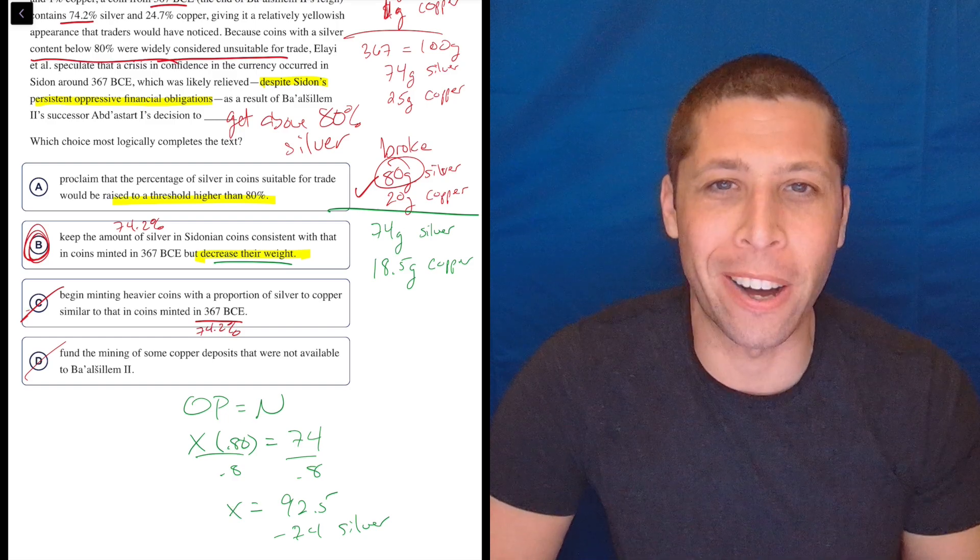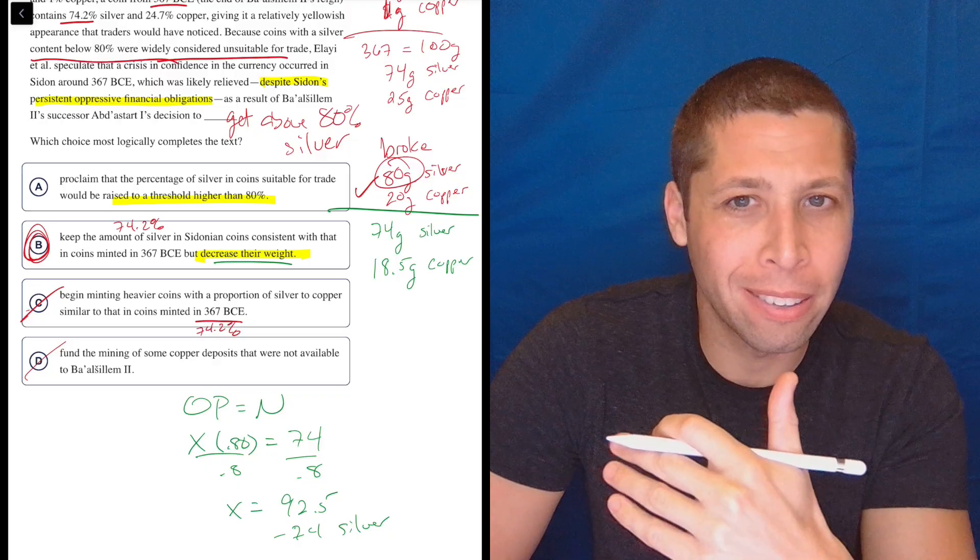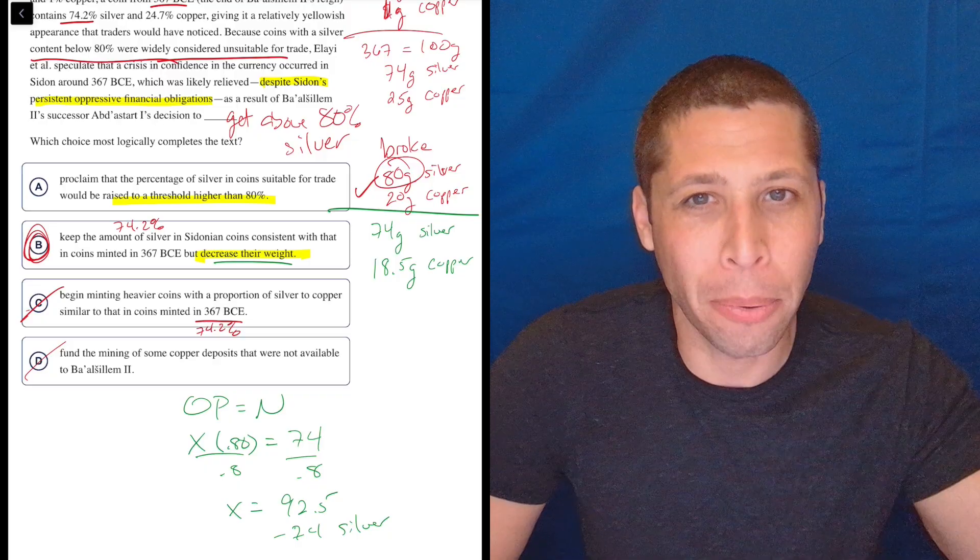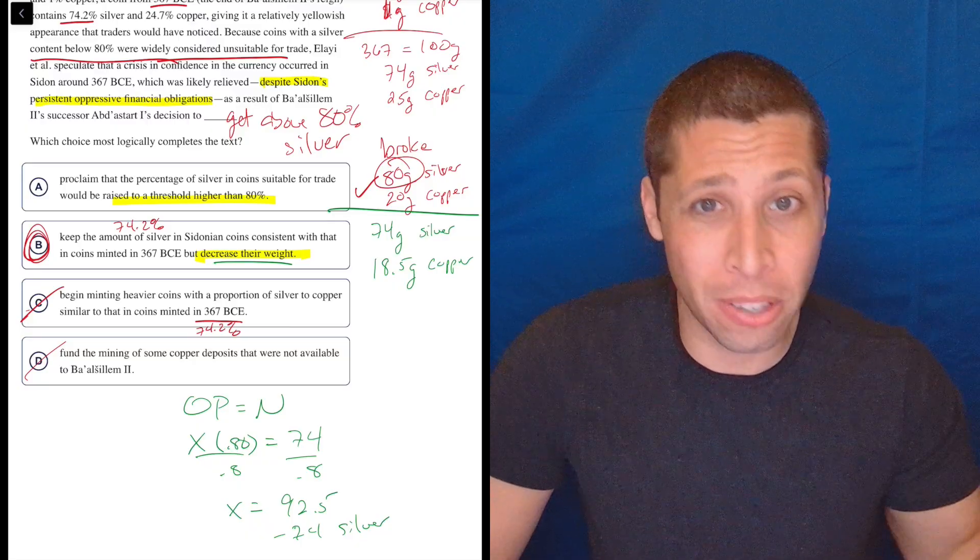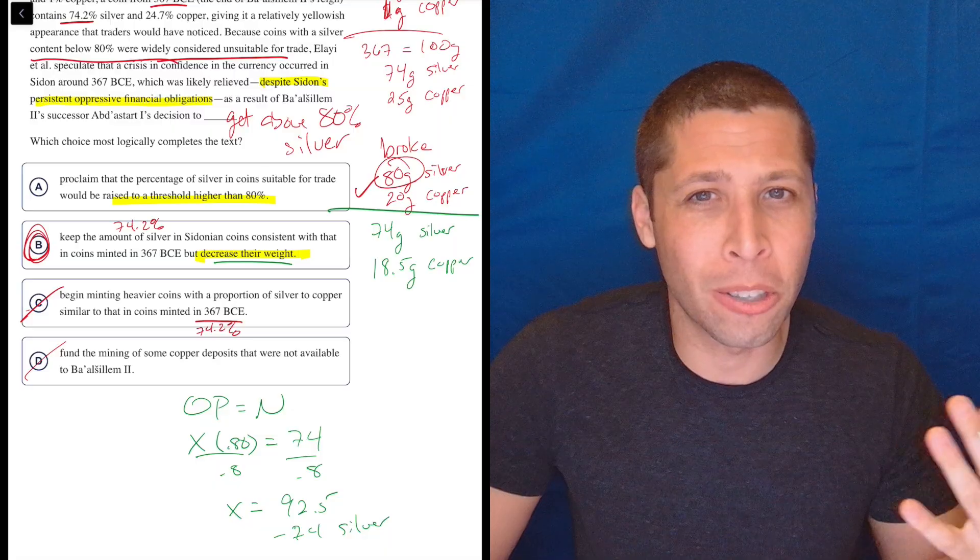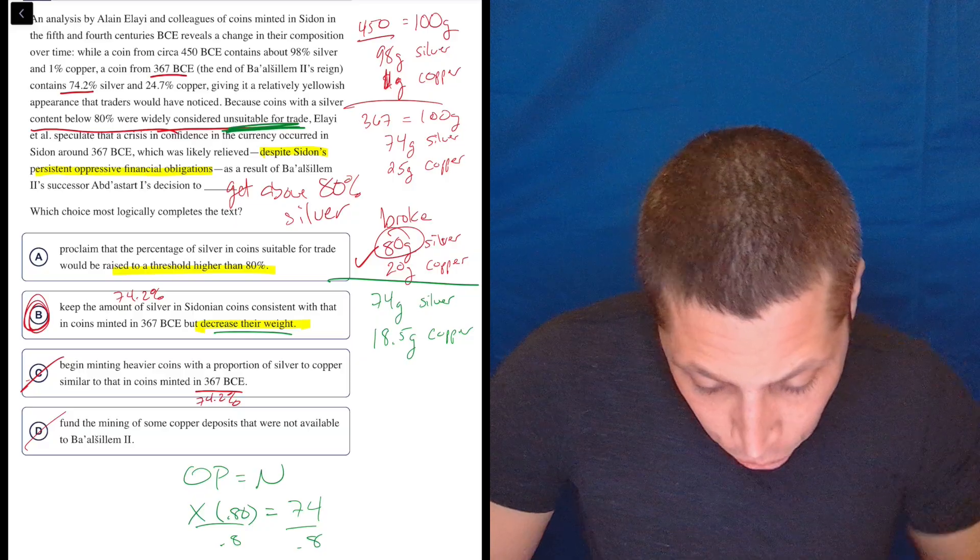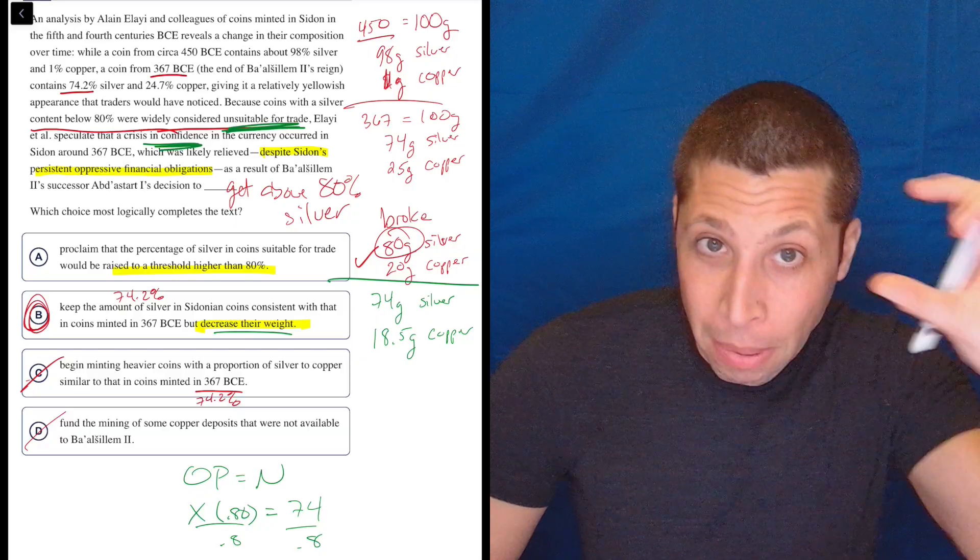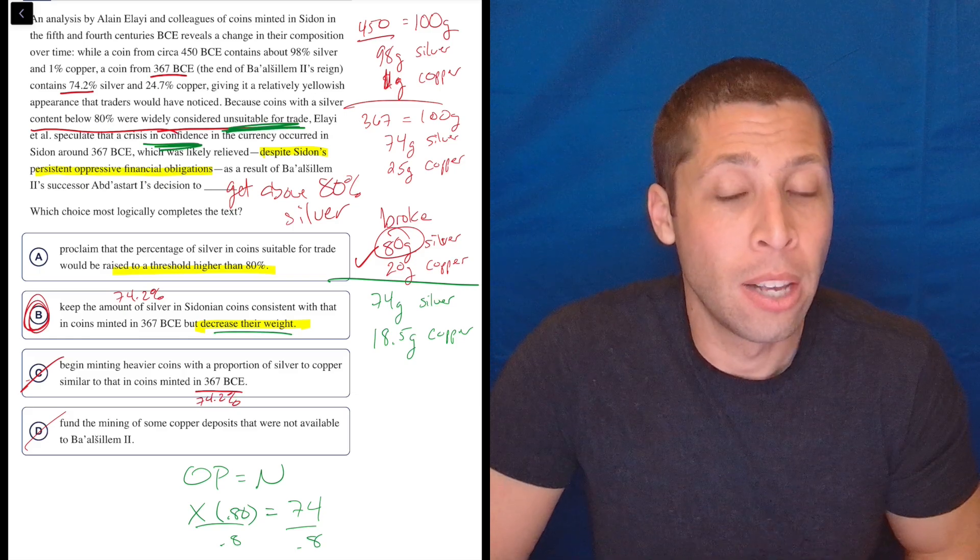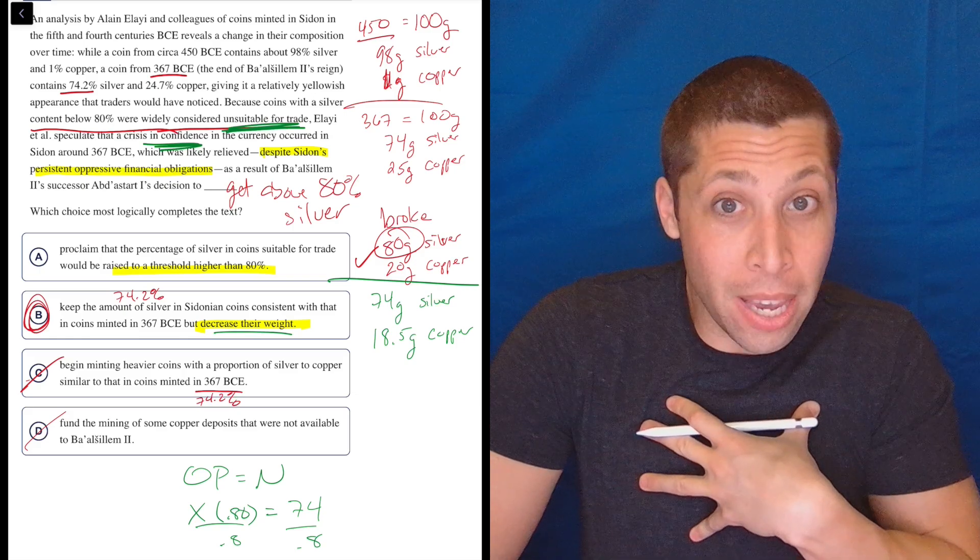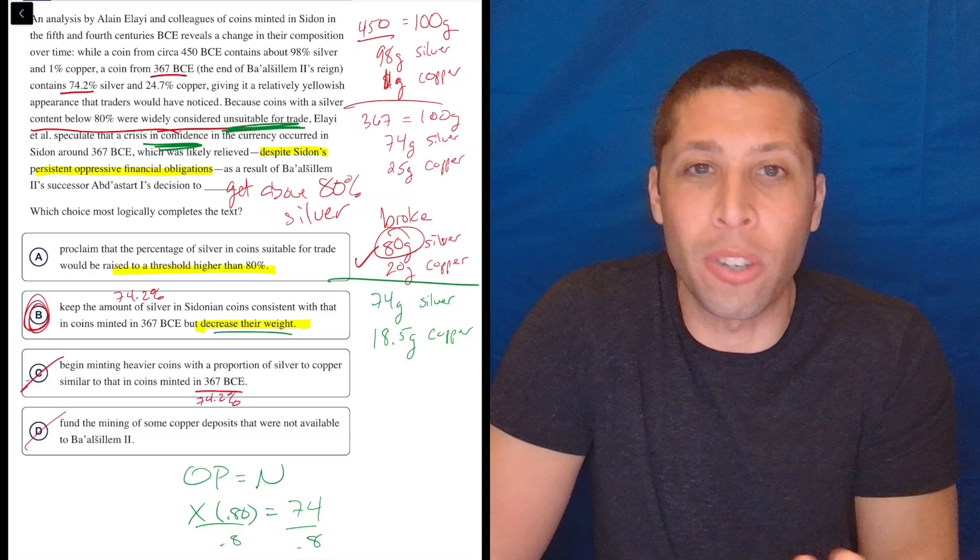And according to the College Board, B is right because we haven't actually spent any more money because we still have the same amount of silver in the coin. But to me, if the coin is worth less, then there's so much other logic that goes with this. A basic understanding of macroeconomics would kind of explain this doesn't really solve the problem. You still have bad coins. People are not going to trust these coins because now you've lowered the weight of them. Before, you were getting away with it because you were cheating them. They thought they were getting 100 grams of silver, but really they were getting less than that because you put all this copper in.